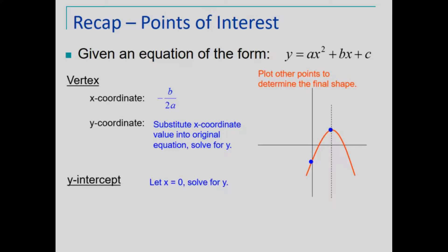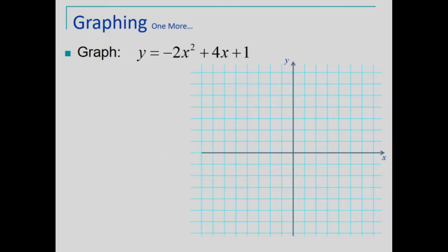Let's take a look at using this procedure to graph another equation. Here the quadratic equation has a leading coefficient that is negative. This means the parabola will open downward.